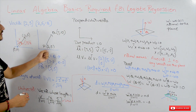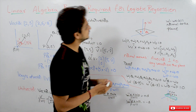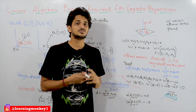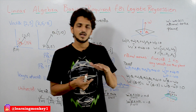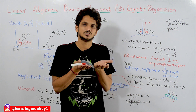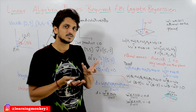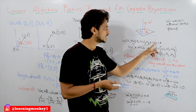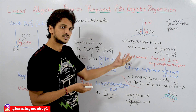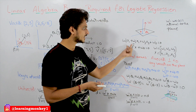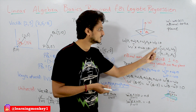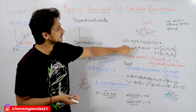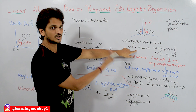These are the basics required to understand our actual concept. Let's take a three-dimensional coordinate system with a plane in it. In our last class we discussed that the equation of the plane is W₁x₁ + W₂x₂ + W₃x₃ + w₀ = 0, which can be written as W^T x + w₀ = 0, where W = (w₁, w₂, w₃) and x = (x₁, x₂, x₃).